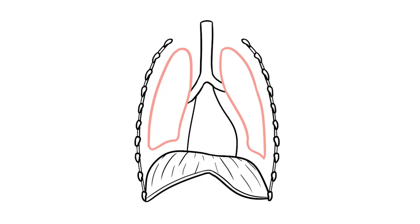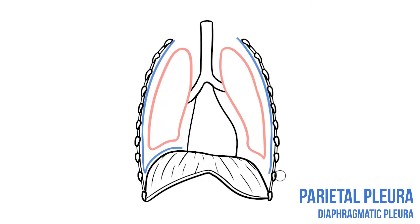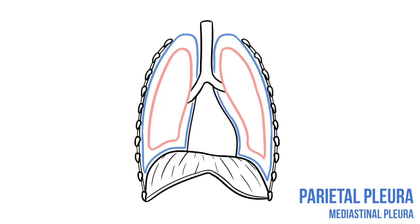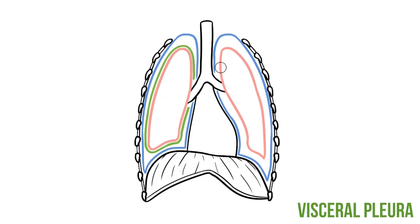The pleural membrane lies in this space between the lungs and the pleural cavity, and is composed of two layers. Parietal pleura lines the internal surface of the chest and can be divided into different regions depending on what it covers: lining the ribs we have costal pleura, the diaphragmatic pleura covers the diaphragm, cervical pleura extends up into the neck, and the mediastinum is covered with mediastinal pleura. The other layer covers the lung itself, and this is the visceral pleura.